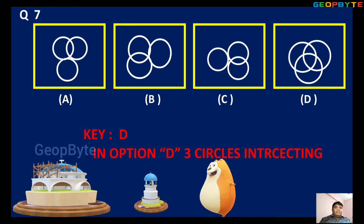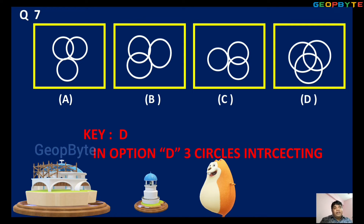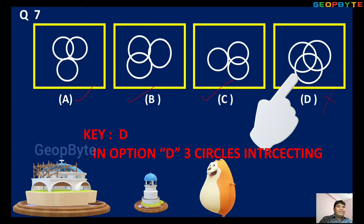Observe the seventh question: A, B, C, D — four options. In option A, two circles intersecting, one circle externally touching. Option B: two circles intersecting, one circle externally touching. Option C also: two circles intersecting, one circle externally touching. But option D: three circles all intersecting each other. So A, B, C have the same pattern, but D does not have that pattern. Option D is the answer — key D. In option D, three circles are also intersecting.